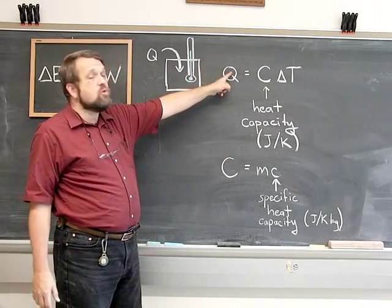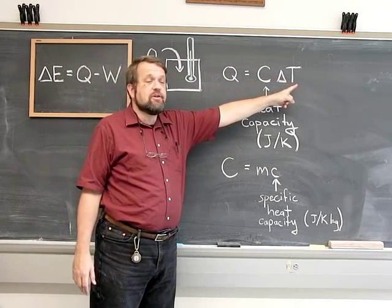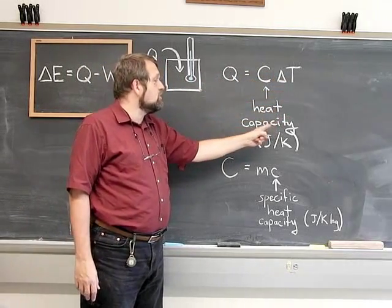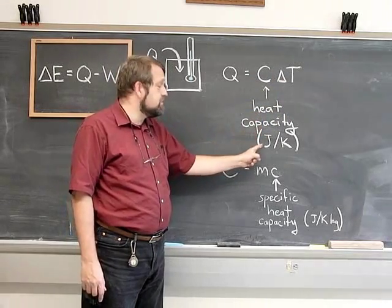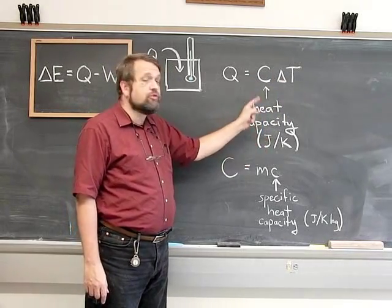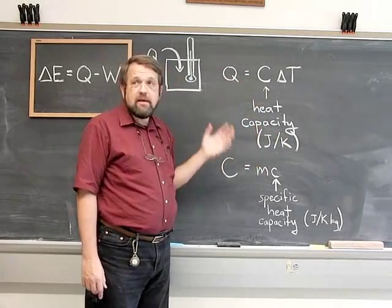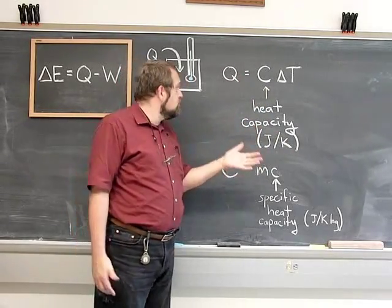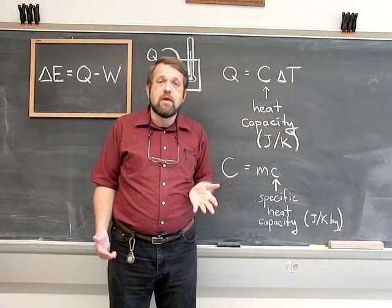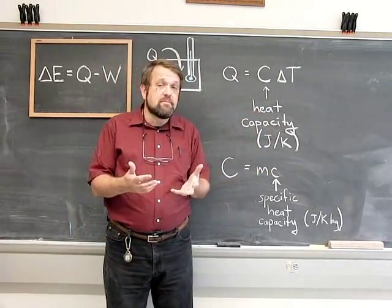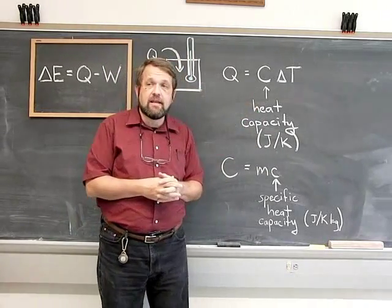The amount by which the temperature increases is proportional to the amount of heat added. So Q, the heat input, is a constant times the change in temperature. That constant is called the heat capacity of the system, measured in joules per Kelvin. The heat capacity may depend on temperature, volume, and so on, but for many systems it's nearly constant over a large range of temperatures.